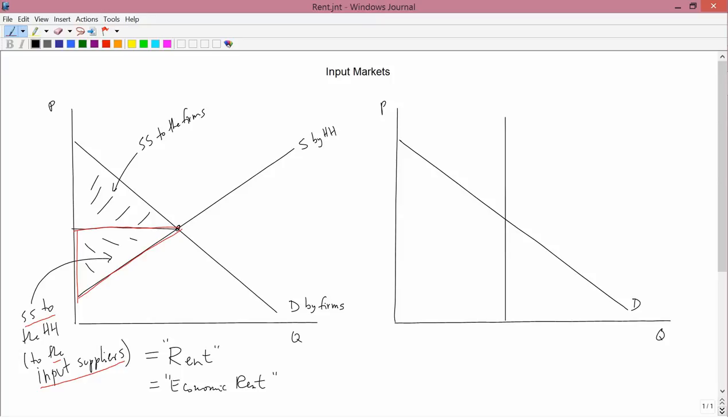So the definition here is completely straightforward. Rent is the social surplus that goes to the input suppliers. But it's natural to ask, why do we call it rent? I mean, rent is something that we pay when we get an apartment or get a machine temporarily.